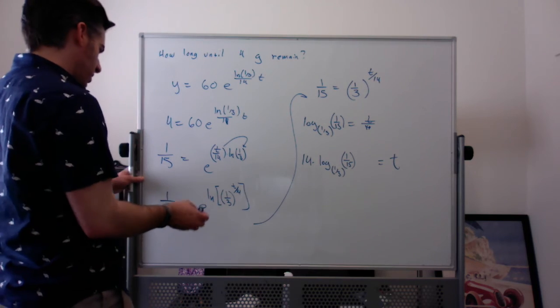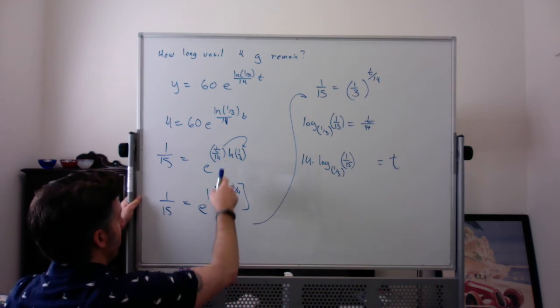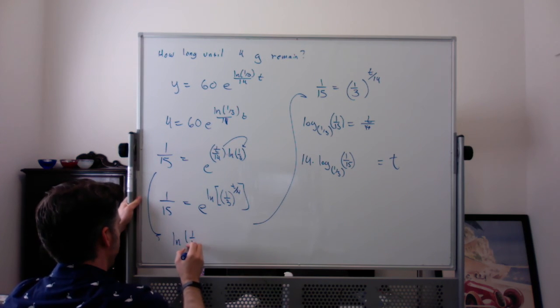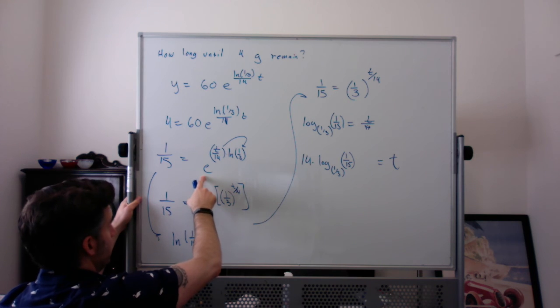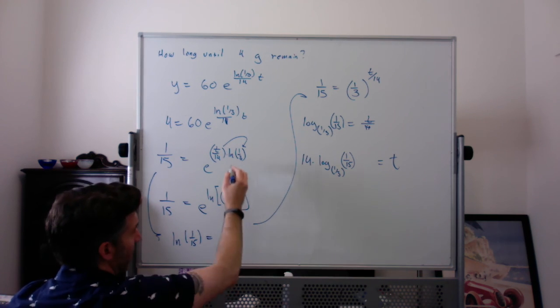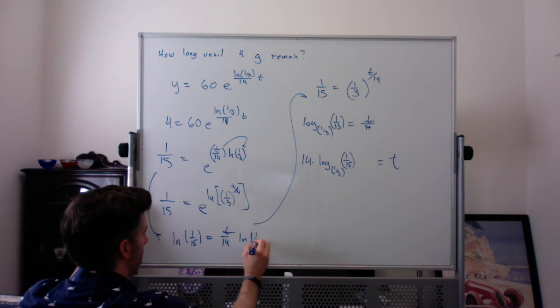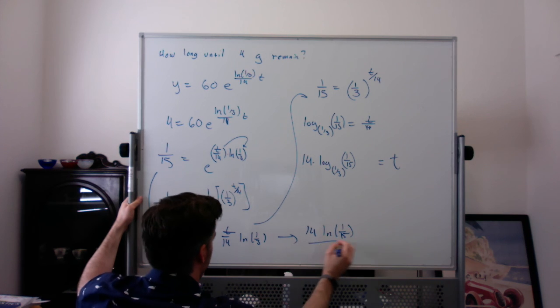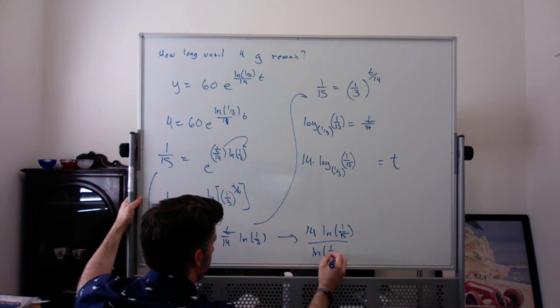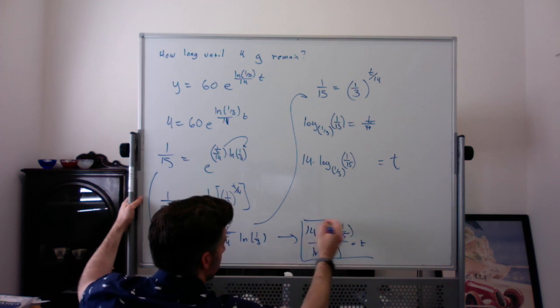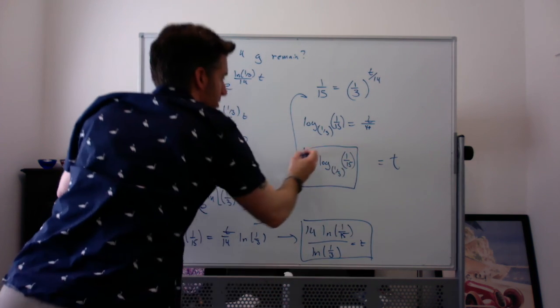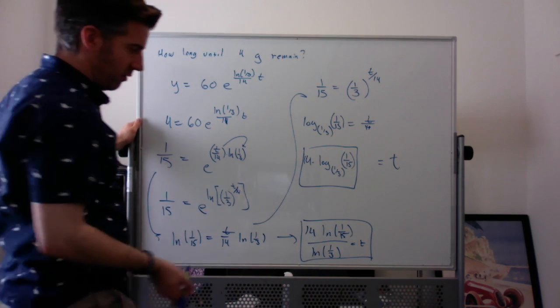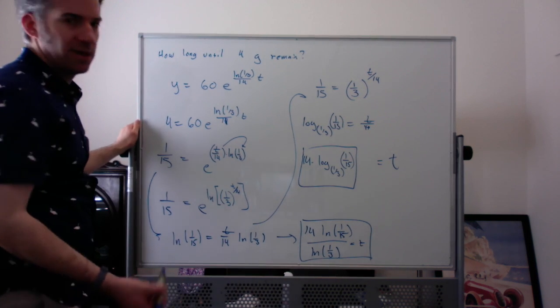If instead we've just kind of done it from here, or from here really, and taken the log of both sides, the natural log of 1/15 equals the natural log of this is just the stuff on top. And then you would get, times by 14 divided by natural log of 1/3, t equals 14 times natural log of 1/15 over natural log of 1/3. Same thing.